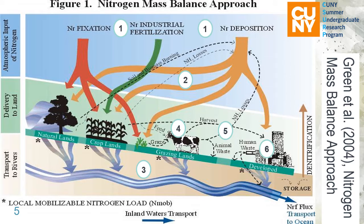Three atmospheric nitrogen inputs labeled next to one will be absorbed by the land. Natural land, cropland, and animal waste will return nitrogen losses to the atmosphere and form nitrogen deposition. Each land type will transfer part of the nitrogen to the river system and eventually flow to the oceans. There is also horizontal nitrogen transportation, where animals eat crops and grass, and humans harvest the crops and animals.